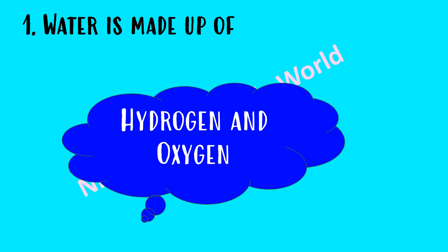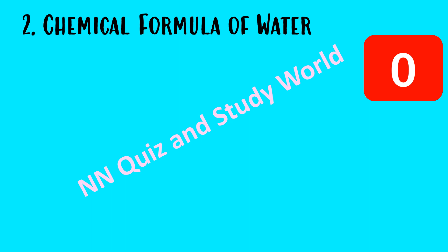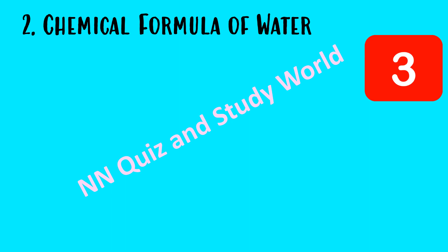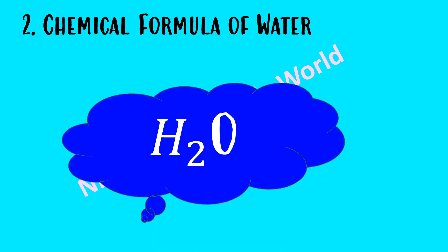The answer is hydrogen and oxygen. The chemical formula of water is dash. The chemical formula of water is H2O.